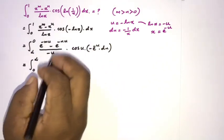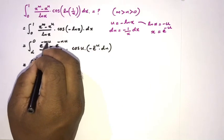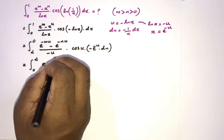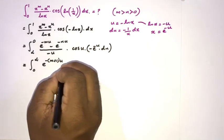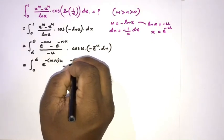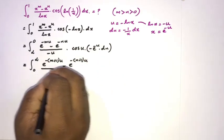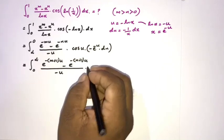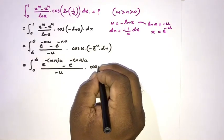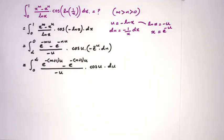After multiplying through by e to the minus u, we get the integral from 0 to infinity of e to the minus (m+1)u minus e to the minus (n+1)u, all over minus u, times cosine of u, du.